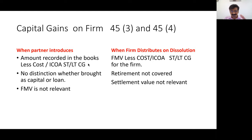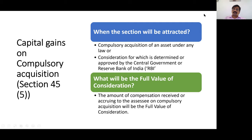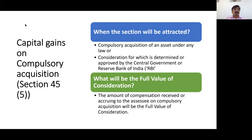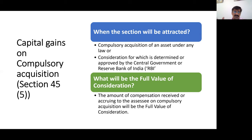Sections 45-3 and 45-4 come more at the final level, not the intermediate level. Section 45-5 is also something that appears more at the final level, but it is a very important provision. Section 45-5 was introduced from assessment year 1988-89. Compulsory acquisition is always a transfer. Section 45-5 splits the capital gains computation into two parts: initial compensation and enhanced compensation.